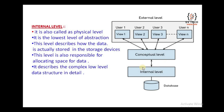So this is the three levels of abstraction. In the next class, we are going to discuss about data independence, because the three-level architecture is designed to provide levels of abstraction and data independence. Please do subscribe to this channel and share with your friends for more content like this.